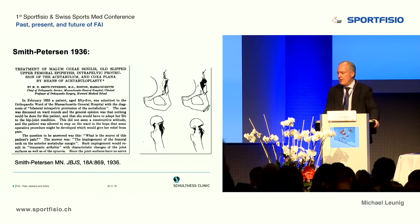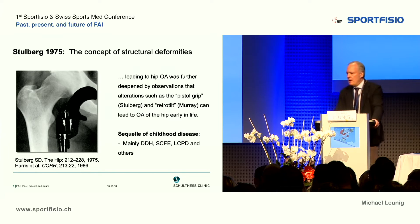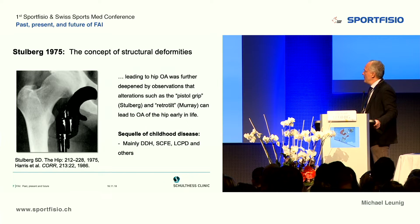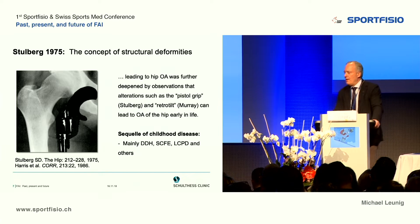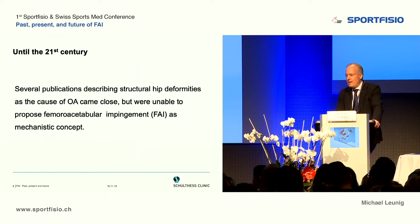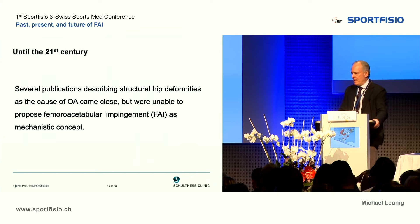Smith Petersen, a surgeon at Massachusetts General in Boston, reported on the treatment of malum coxae senilis — hip of an old person — but also old slipped upper femoral epiphysis, protrusion, and coxa plana from Perthes disease. He showed that you can remove bone of the rim or at the head-neck junction to improve some of these hips. So these concepts of impingement were not completely new. David Stuhlberg and Bill Harris also proposed that structural deformities of the hip can lead to osteoarthritis.